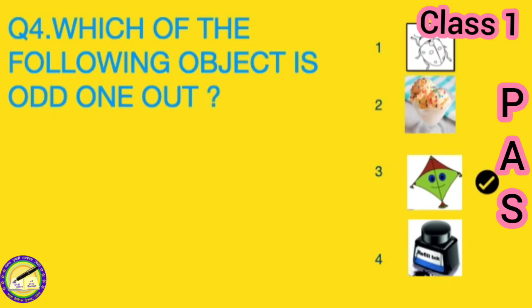Fourth question is: which of the following object is odd one out? We have four options: insect, ice cream, kite, and ink pot. Insect, ice cream, and ink pot start from the letter I, whereas kite starts from letter K. So kite is odd one out. You have to put a tick on the third option, kite.